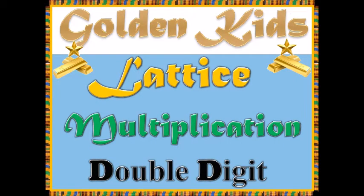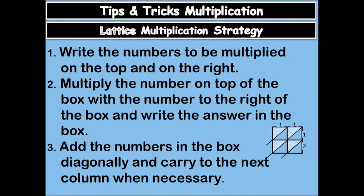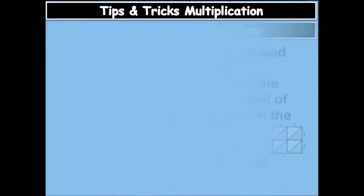Golden Case lattice multiplication, two digits. Write the numbers to be multiplied on top and on the right. Multiply the numbers on top of the box with the number on the right of the box and write the answer in the box. Add the numbers in the box diagonally and carry to the next column when necessary. So you see the box over there. That is tips and tricks of multiplication, we are learning multiplication.